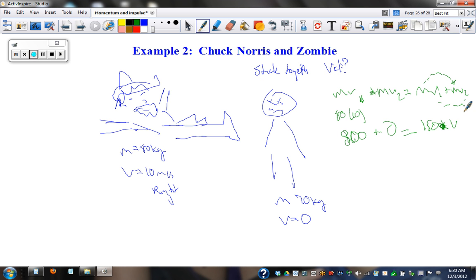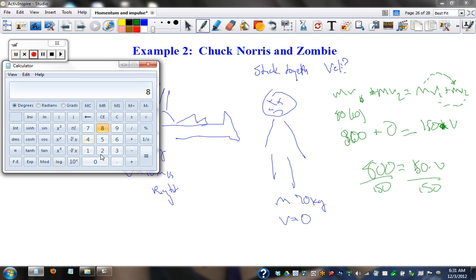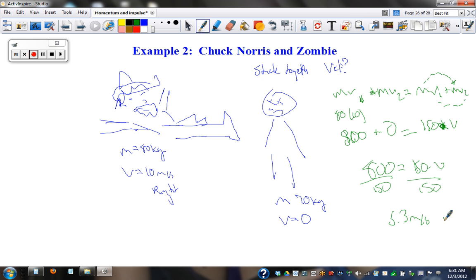And the velocities are also going to be the same because they're going to combine. So we've got 800 equals 150 times the final velocity. Divided by 150, divided by 150. 800 divided by 150 equals 5.3 meters per second to the right.